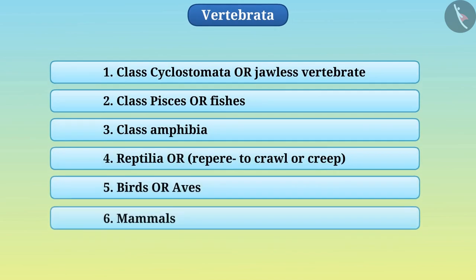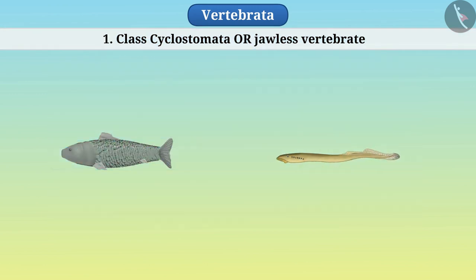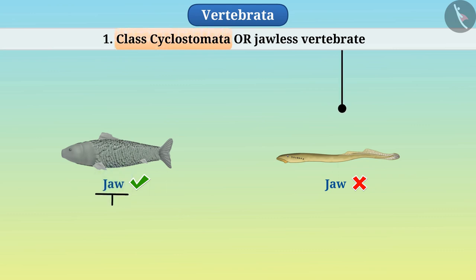We can divide vertebrates into six classes. Some animals in the kingdom vertebrata are jawless while others have jaws. We place jawless animals in class Cyclostomata. A jaw is a mouth opening and closing structure. In some vertebrates, this structure is not present — that is, they are jawless — and they are placed in class Cyclostomata.